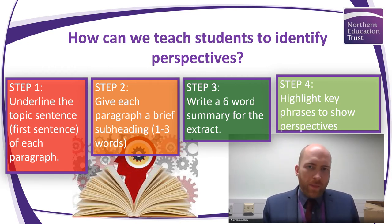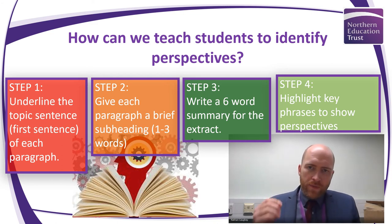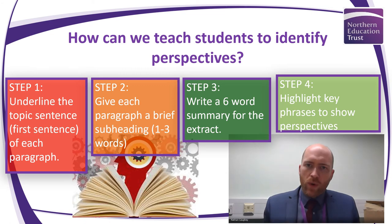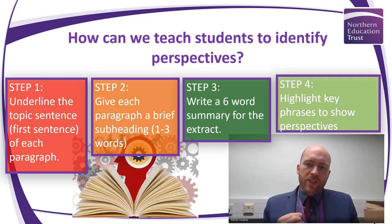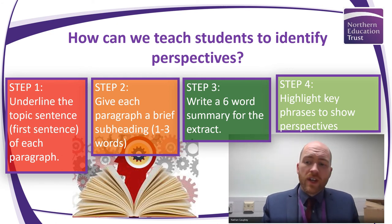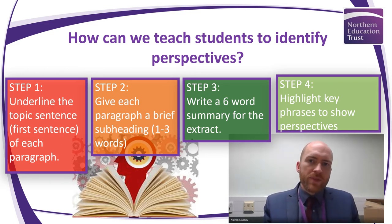Then finally we go to word level — you might get them to highlight individual phrases in the text that show different perspectives. This is where we might look more at methods: imagery, repetition, rhetorical questions — so long as we're doing that not just to identify a method, but to identify an attitude. By doing these four steps, students are able to look at the whole text, each paragraph, and specific words to equip them ready for writing out their response and analysing. And if they've done this, they'll probably be more than ready to write it up and explain their processing as well.